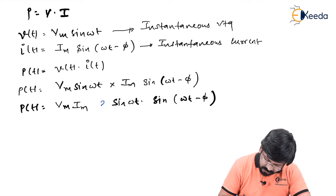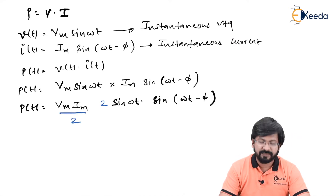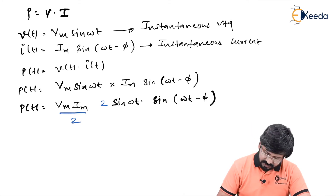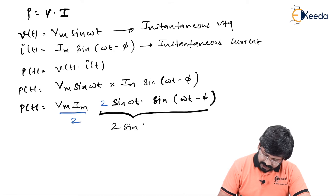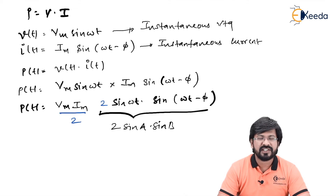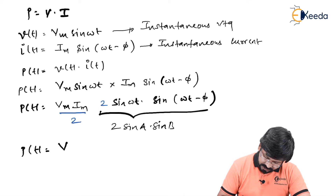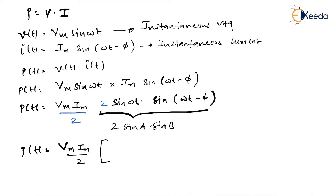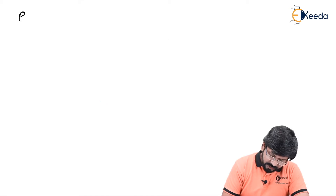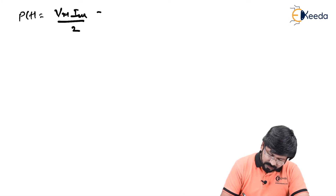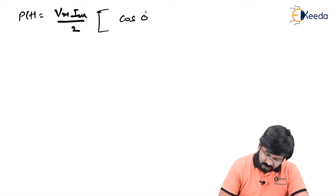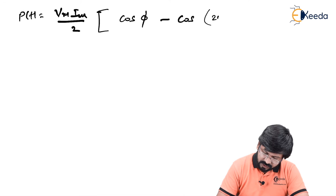We multiply and divide by 2 so we can apply the formula: 2 sinA sinB = cos(A − B) − cos(A + B). Applying this, p(t) becomes Vm·Im/2 times [cos(φ) − cos(2ωt − φ)]. The first term is independent of ωt, and the second term oscillates at twice the supply frequency.